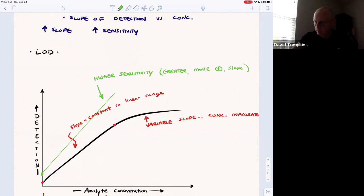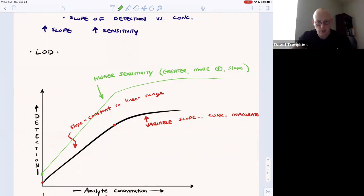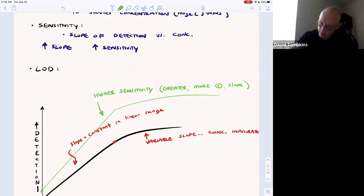At some point that one would curve off and no longer remain linear. The linear range for this would be from the beginning to the point where it becomes curved. And then finally, the limit of detection, this is the lowest concentration of solute or analyte that can be accurately quantified.